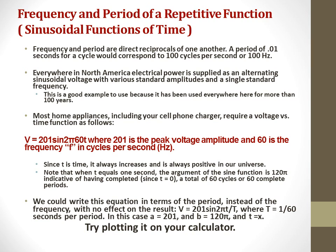Most home appliances, including your cell phone charger, require a voltage versus time function as follows. V = 201 sin(2π60T), where 201 is the peak voltage amplitude and 60 is the cycle frequency f in cycles per second, or hertz. Since T is time, it always increases and is always positive in our universe.